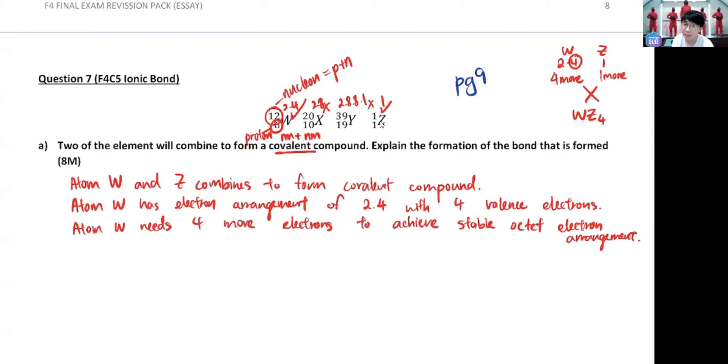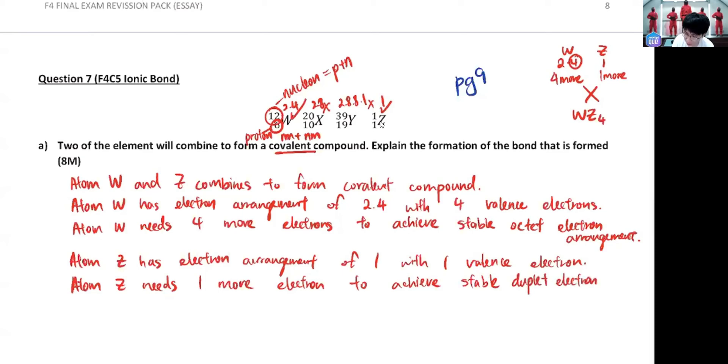Then how about that? So atom Z has electron arrangement of one with one valence electron. How many more does it need? So atom Z needs one more electron to achieve... Wait, something different here. Z become two. Can you rewrite stable octet electron arrangement? What is the keyword when you try to achieve like two? Duplet. Very good. Achieve stable duplet electron arrangement.